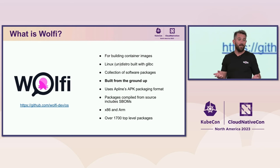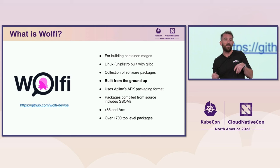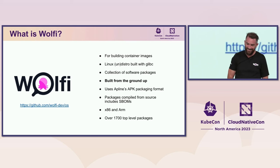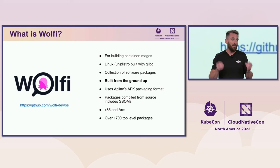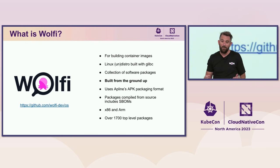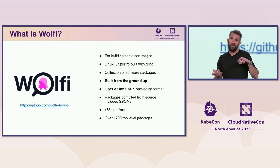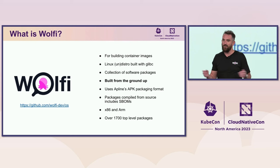It's designed specifically for the cloud native era. It's a Linux un-distro built using glibc. The reason I say un-distro is significant because these cloud containers are running on the cloud and they're actually using the kernel from the host — these images don't include the kernel. It's also a collection of software packages. There are 1,700 current software packages in Wolfi, and it's continually growing. They are currently built to run on both ARM and x86. We use Alpine's APK packaging format — you can't mix and match Alpine's APKs with Wolfi's APKs. It's using a standard format for packaging.